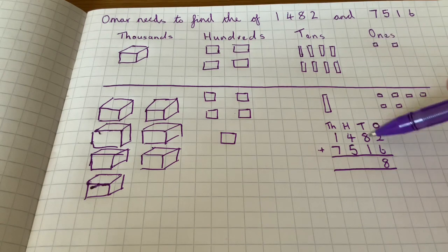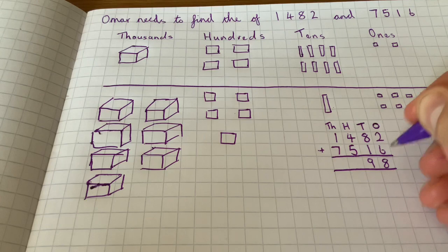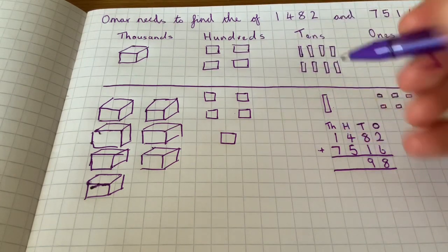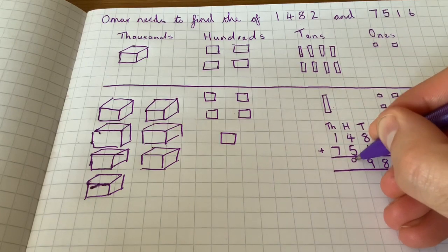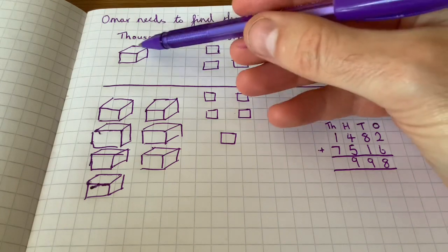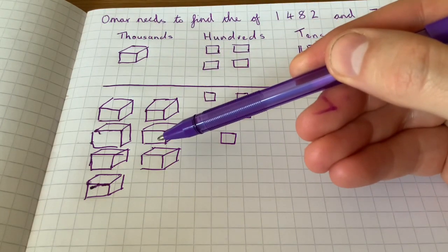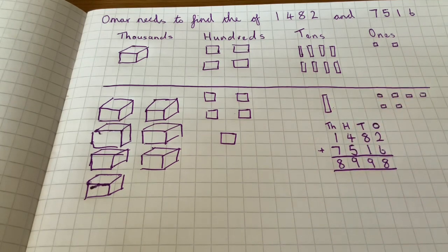Then we've got four hundreds, five hundreds add five hundreds, and that's nine hundreds. And then we get one thousand add seven thousand, so we get eight thousand nine hundred and ninety-eight.